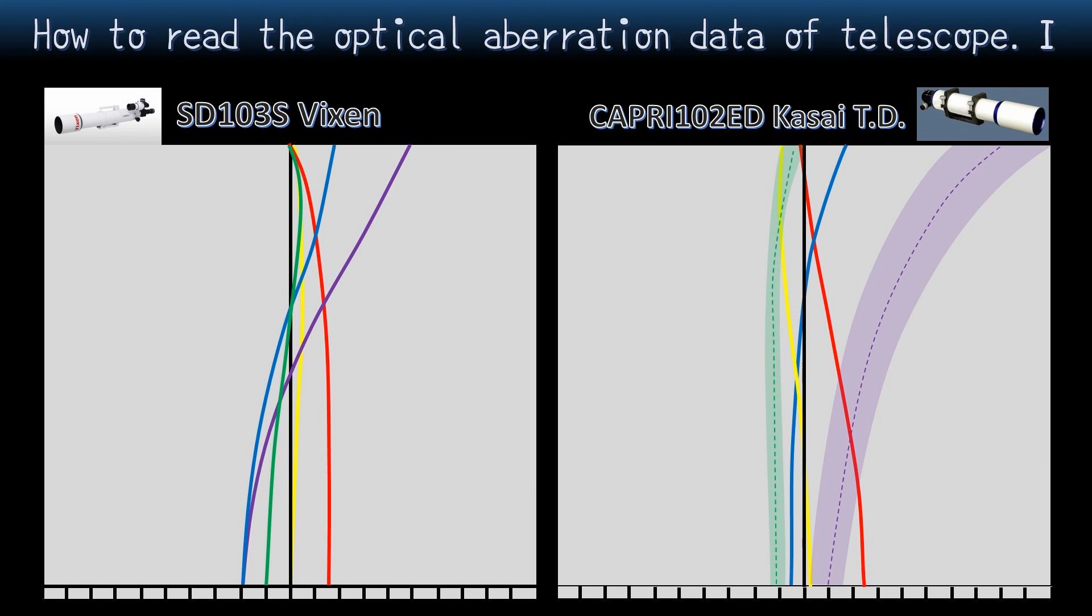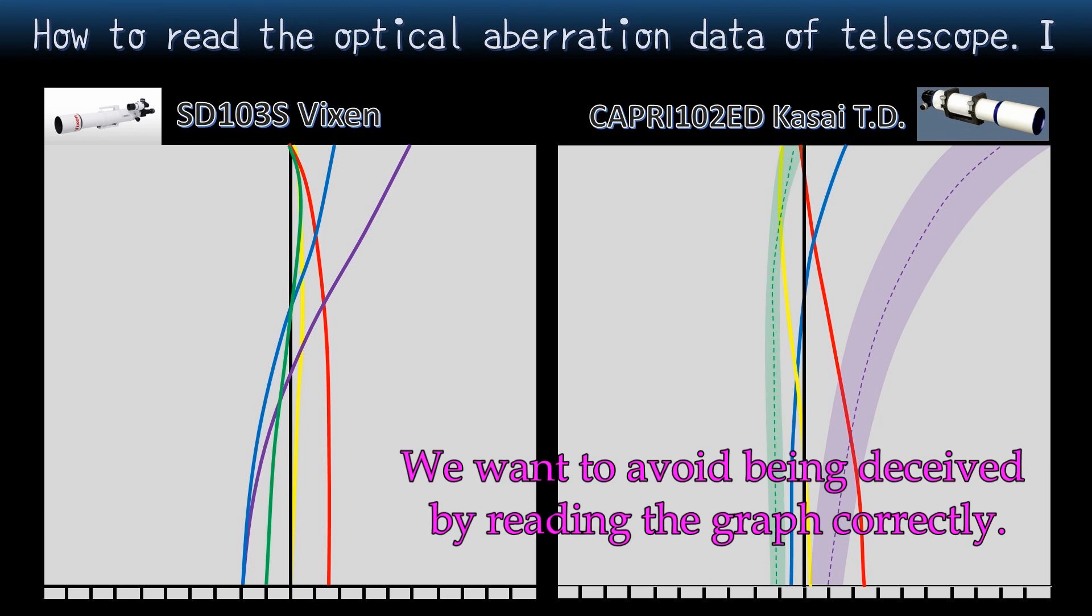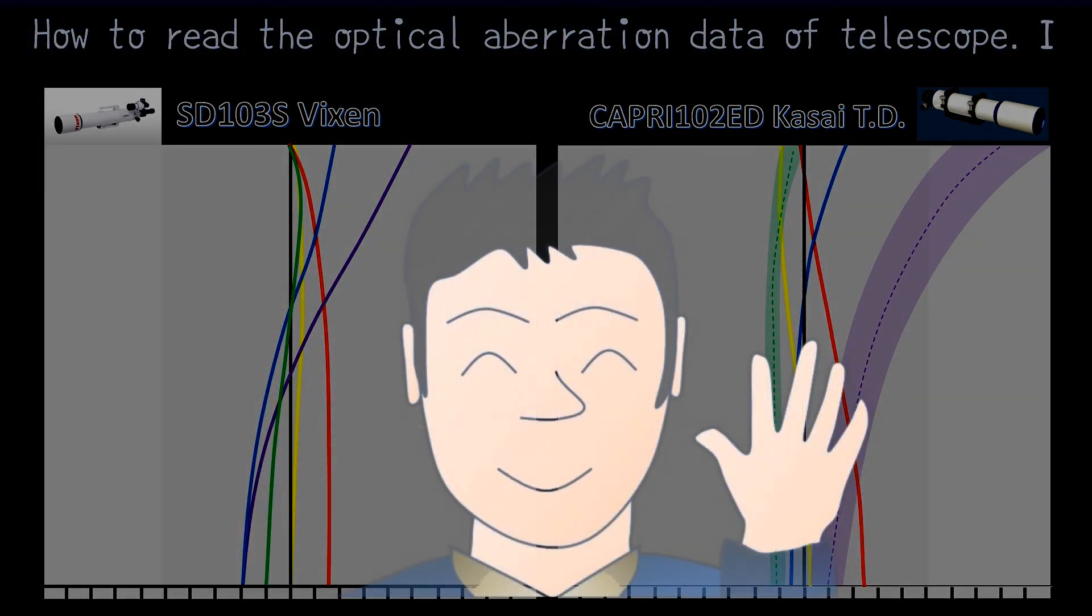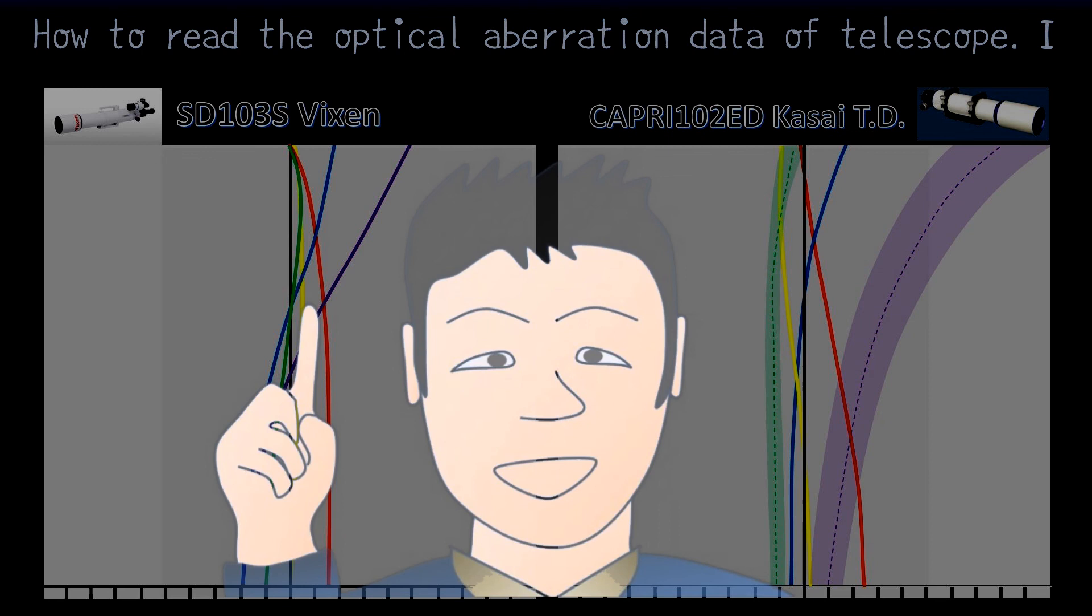I don't know how much Kasai Trading has the intention of deceiving customers. However, we also want to avoid being deceived by reading the graph correctly. Okay, let's finish it up for today. Do you understand how to see aberration diagrams so far?